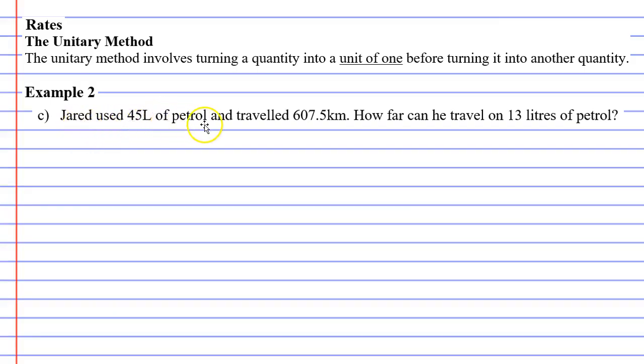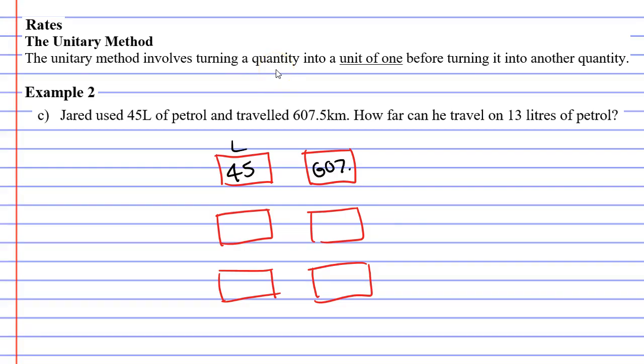Let's now move on to question C. Jared used 45 litres of petrol and travelled 607.5 kilometres. How far can he travel on 13 litres of petrol? Once again, we're going to do our boxes. In fact, I'm going to draw six because I know we're going to have to use the unitary method.